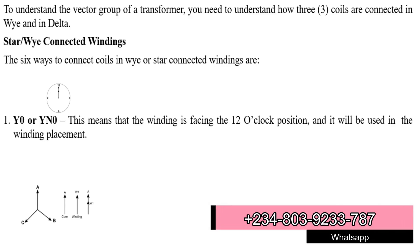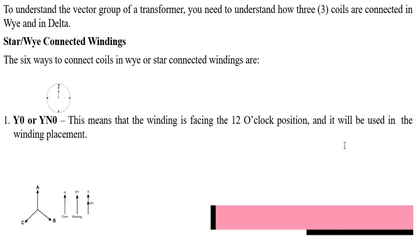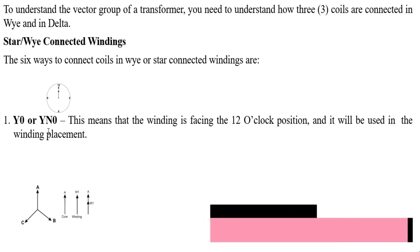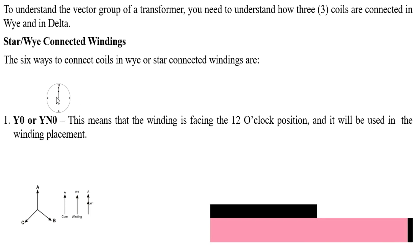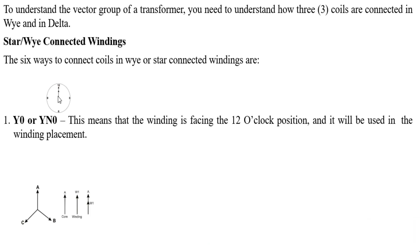We will now see the star connection. On the star connection we have six great connections that we are going to examine. The first method to connect a star or Y-connected winding is Y0 or YN0. Y0 means 12 o'clock. If you look at the clock now, you see the hour hand is showing 12 o'clock.